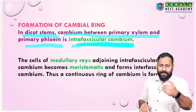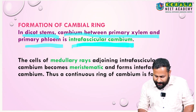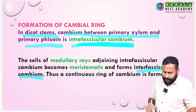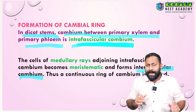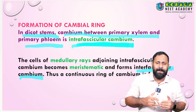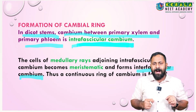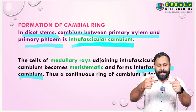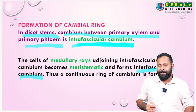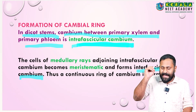Intrafascicular cambium develops into interfascicular cambium. Medullary rays are radially placed parenchyma cells present between vascular bundles. Cells of medullary rays adjoining the intrafascicular cambium become meristematic and form interfascicular cambium.